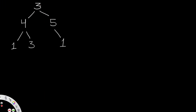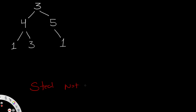This is the exact same tree. We start at the root node, which has a value of 3 — meaning we get $3 if we steal from that house. I'll use 'S' to represent stealing and 'NS' for not stealing. If we steal at 3, we cannot steal at 4 and 5, because doing so would get the police called. So at each step, we have two options: steal or not steal. And if we steal at a node, we cannot steal at its children nodes.